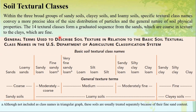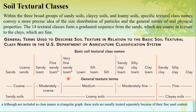Within the three broad subgroups of sandy soils, clay soils, and loamy soils, 14 specific textural classes graduate from sands to clay — that is, from coarse to fine in texture. These include sands and loamy sands (under sandy soil); sandy loam, fine sandy loam, loam, very fine sandy loam, silt loam, silt, sandy clay loam, silty clay loam, clay loam (under loamy soil); and sandy clay, silty clay, and clay (under clay soil). Fine sandy loam and very fine sandy loam are not included in the triangular graph, so there are 12 textural classes shown in the triangle.